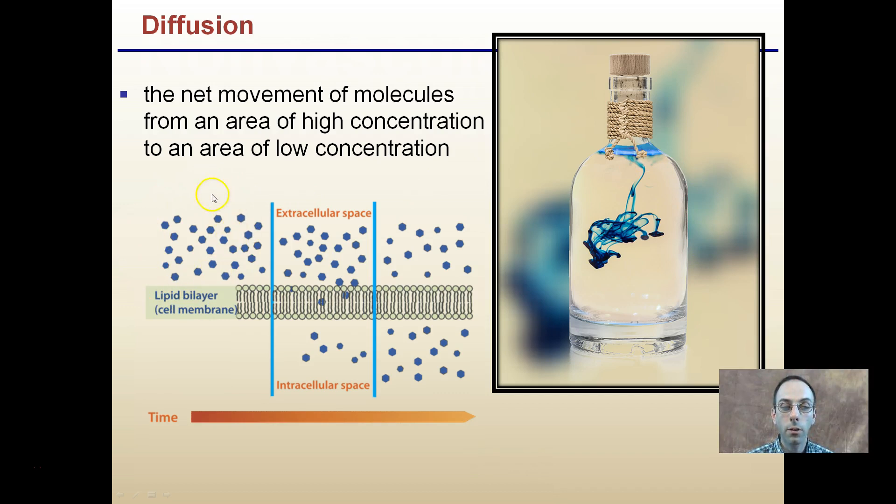To give you another example of that, here's high concentration. We see it going to low concentration over time to the point that the molecules on the top and bottom side will equal one another. And this is the process of diffusion.